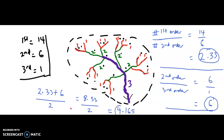So the bifurcation ratio is in fact 4.165. Now, what do you understand about the significance of the bifurcation ratio? We determined the first order versus the second order, and the second order versus the third order. We determined the means of both ratios and got a value of 4.165.